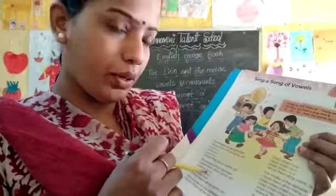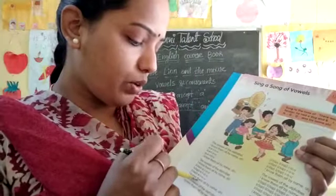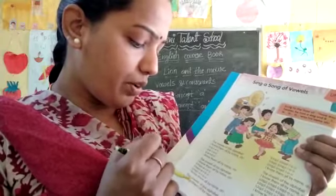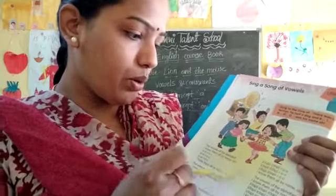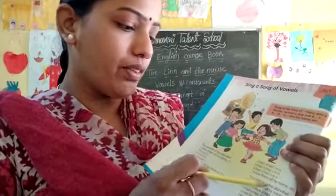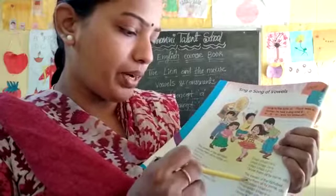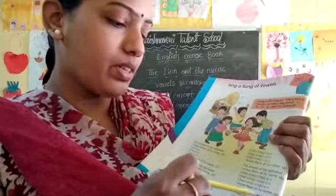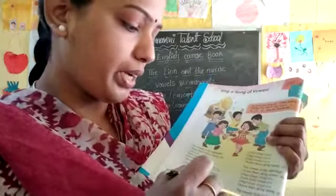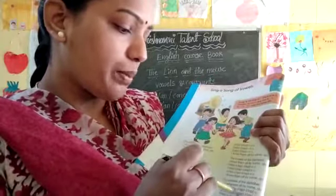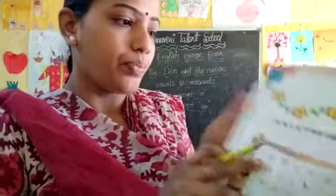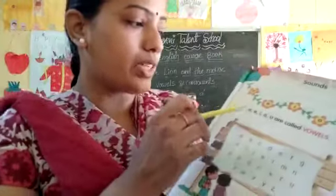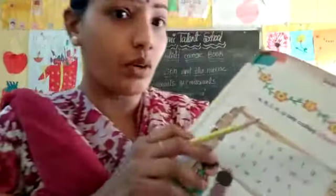Clap — A, E, I, O, U. I know them all by name-o. The vowels of the alphabet, I know them all by name-o. Clap — I, O, U. The vowels of the alphabet. Clap, clap, clap — O, U. The vowels of the alphabet, I know them all by name-o. Clap, clap, clap, clap — U. Yes children, A, E, I, O, U are called vowels.